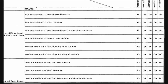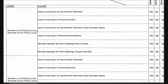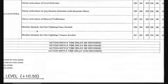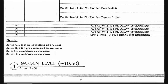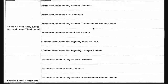Here we have a legend. D0 means action with a time delay of 0 seconds — the action shall be activated immediately. D1 means the action shall be delayed 60 seconds. D2 means the action shall be delayed by 90 seconds. D3 means the action shall be delayed by 120 seconds.